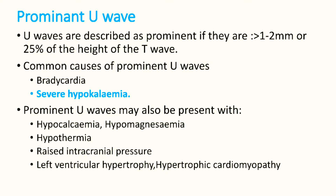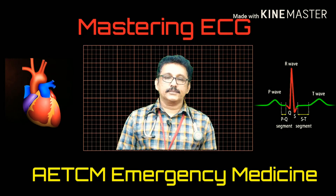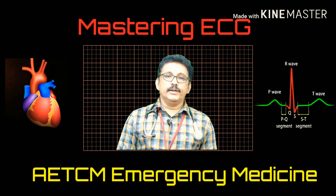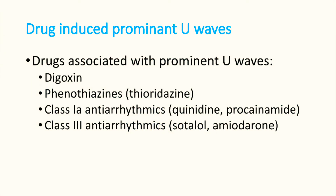All these conditions may show U-waves, but classically it is described in severe hypokalemia, especially in patients admitted with hypokalemic periodic paralysis. Some drugs can also produce prominent U-waves, such as digoxin, phenothiazines, quinidine, procainamide, sotalol, and amiodarone.